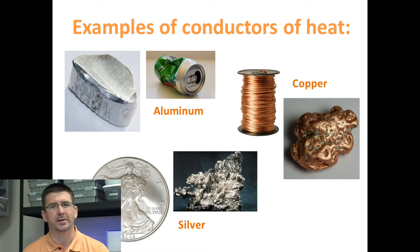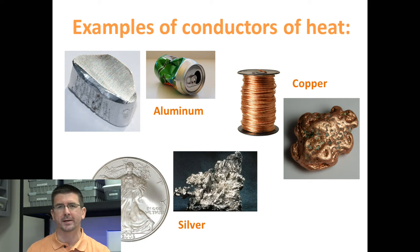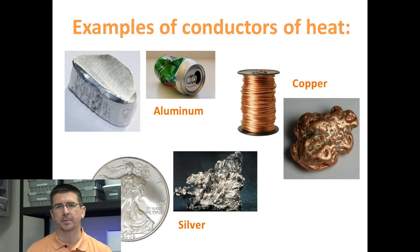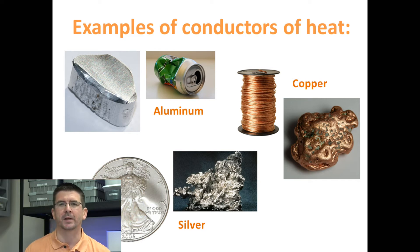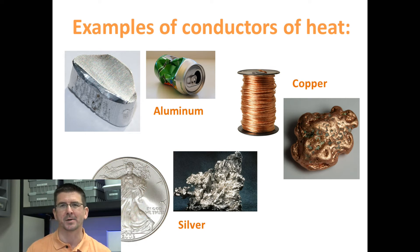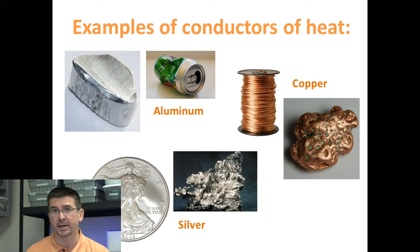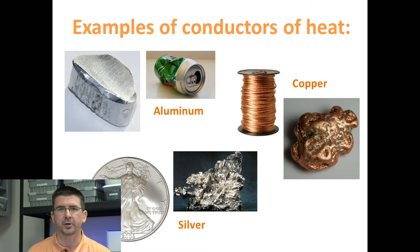A frying pan is a great example of something that we want to conduct heat. We put the pan on the stove, we put the food in the pan, and we want the heat to transfer from the stove top into the food. So we want to make sure that the frying pan or pot is made out of a conductive material. That's why your cookware might be made out of cast iron, copper, or aluminum — all common materials because they transfer heat easily.